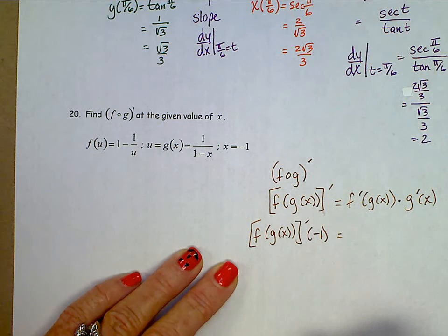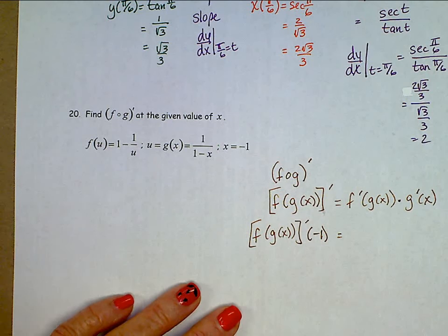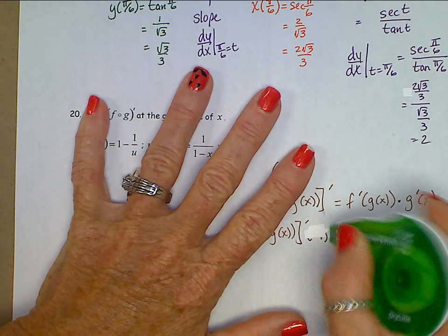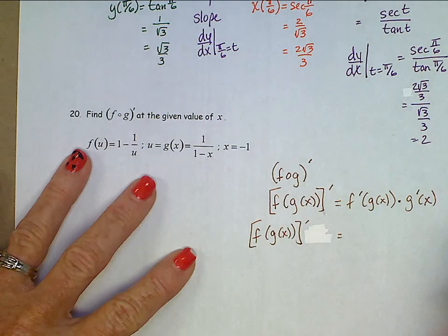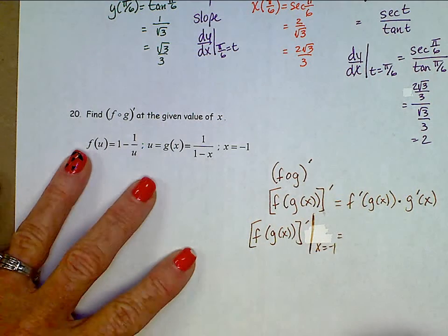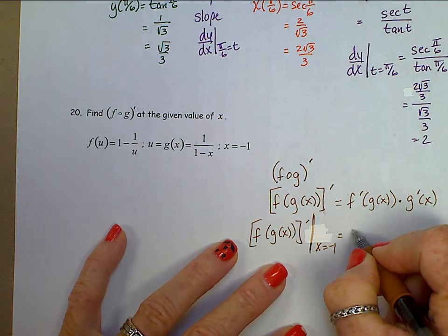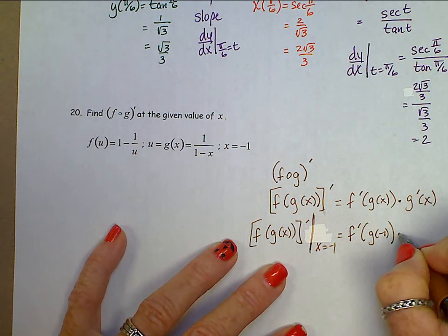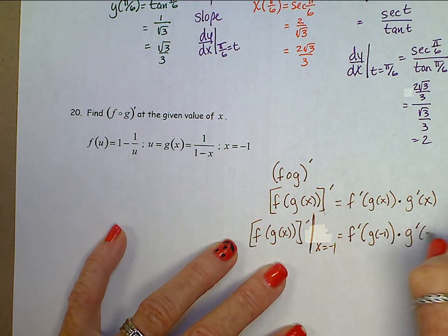But now we want this at x equals negative 1. And then subbing in, this is f prime of g of negative 1 times g prime of negative 1.